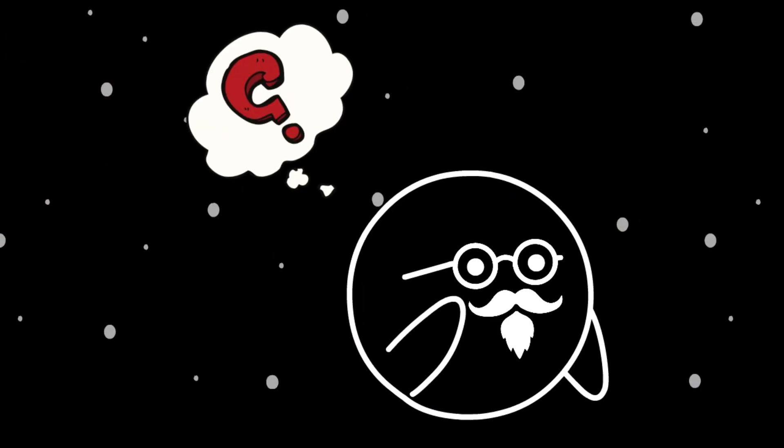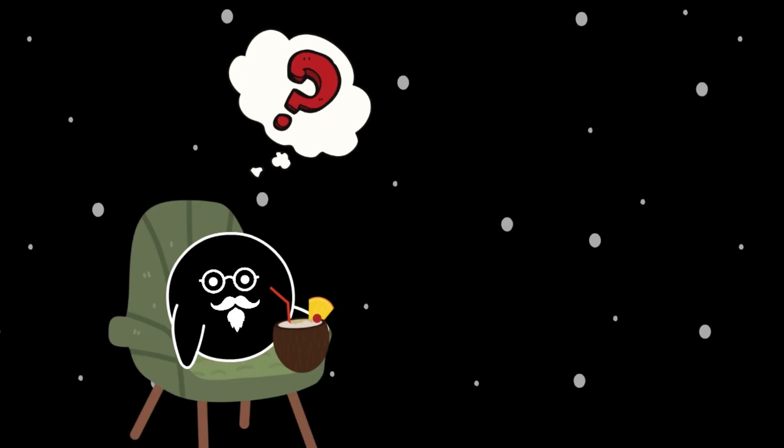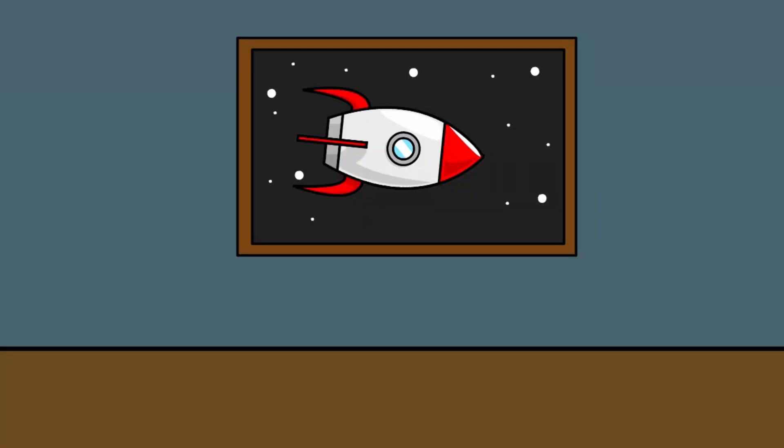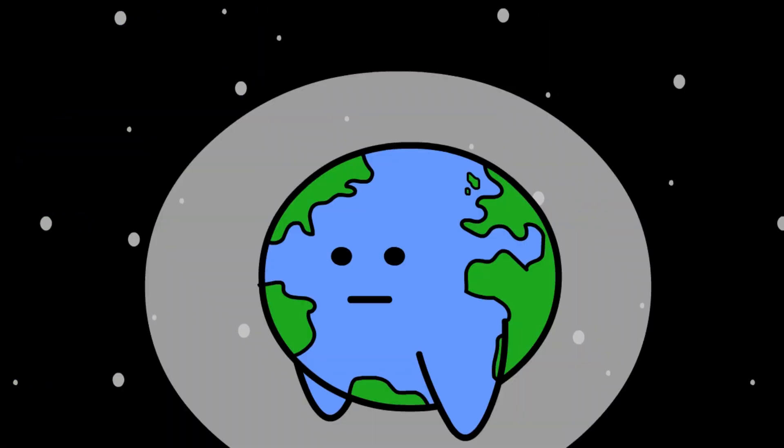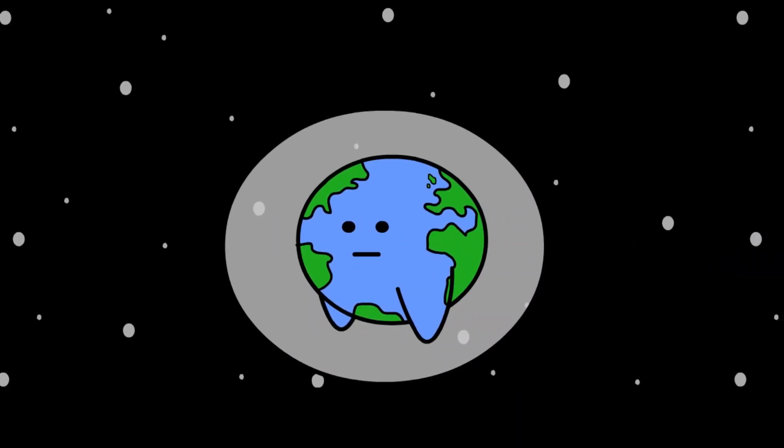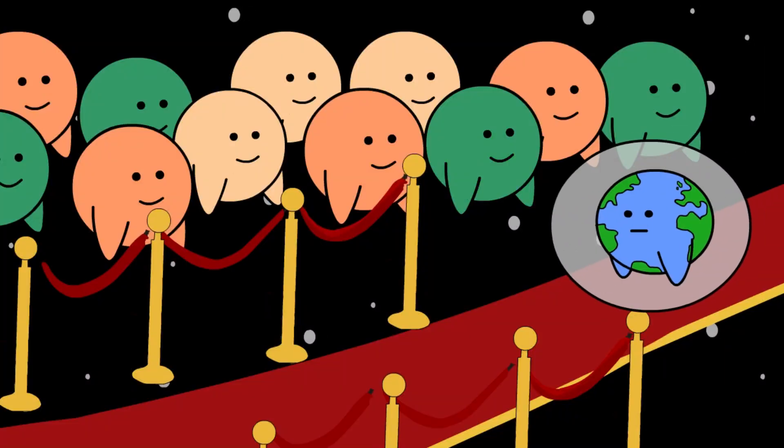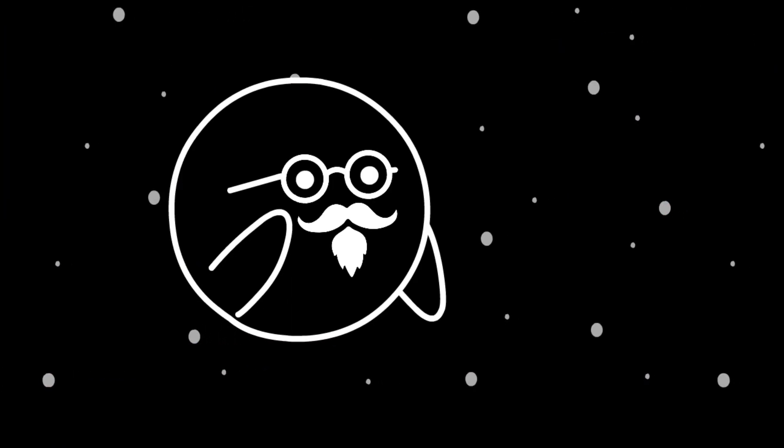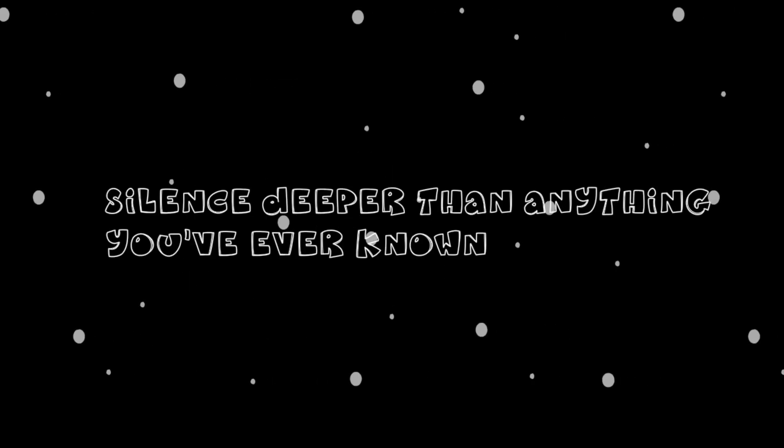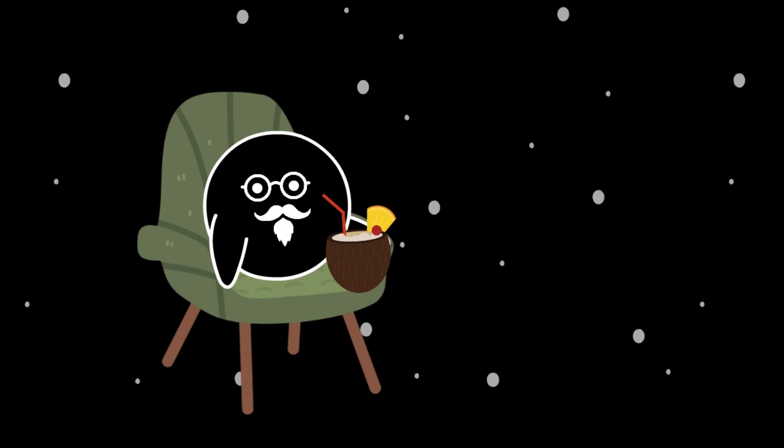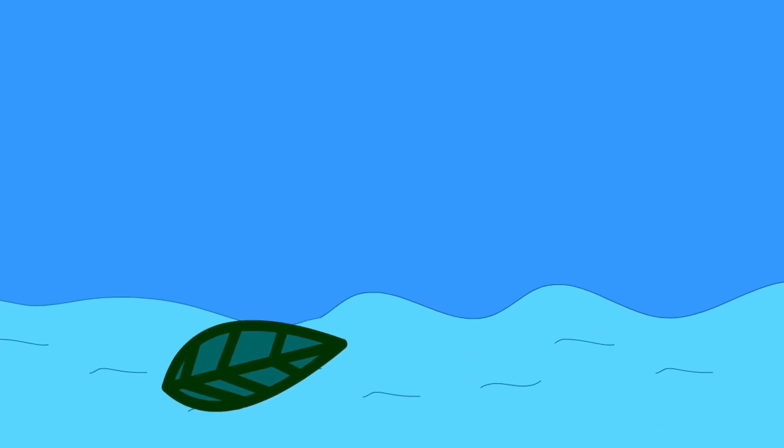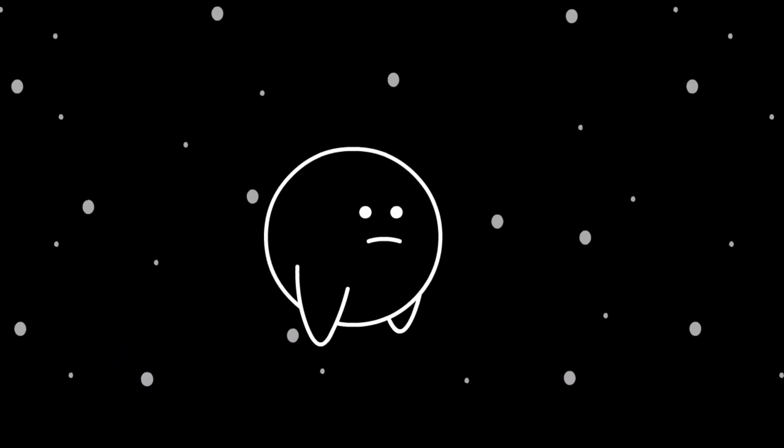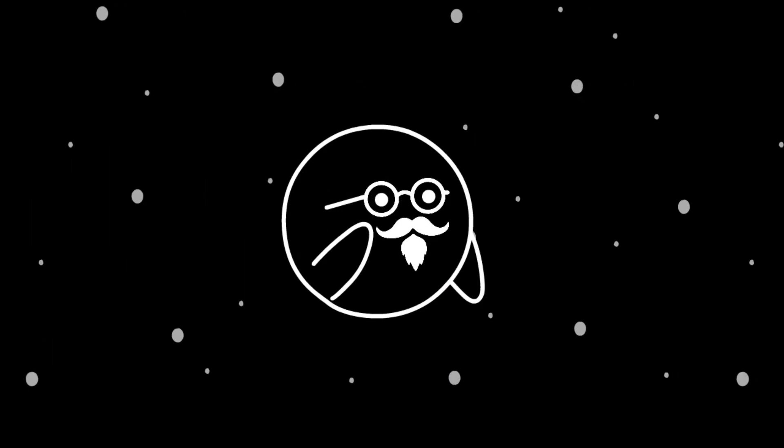But what if somehow we could cross the event horizon without dying instantly? What if we built a ship strong enough to resist spaghettification, protected by some impossible technology? The view would defy imagination. You'd see light from every direction curve around you, wrapping the universe into a glowing sphere. Forward and backward would lose meaning. Time would slow to a crawl. Every second would stretch forever. And then there'd be silence—a silence deeper than anything you've ever known. You'd fall, not through space, but with it. Space itself would move, carrying you toward the singularity like a leaf in a waterfall. The outside universe would fade away until there was only one thing left: gravity.